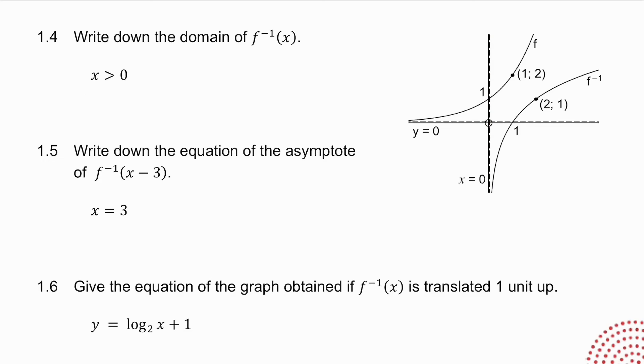In 1.5, I ask you for the equation of the asymptote of f to the minus 1 of x minus 3. Now, what does that x minus 3 do to the graph? It moves it 3 units to the right. So what does it do to my asymptote? Well, it was x equals 0. Move it 3 units to the right, and my asymptote becomes x equals 3.